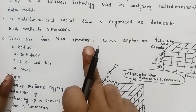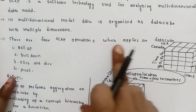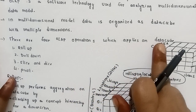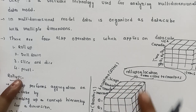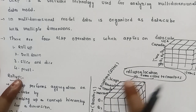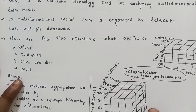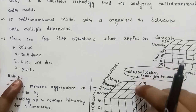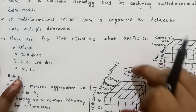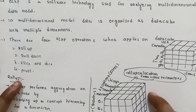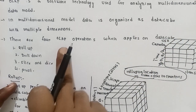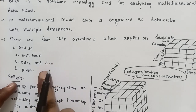There are four OLAP operations which apply to a data cube. Multidimensional data is represented using a data cube. The four OLAP operations are: Roll Up, Drill Down, Slice and Dice, and Pivot.